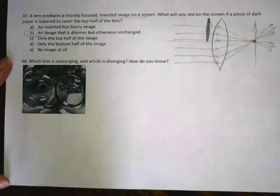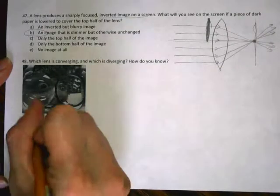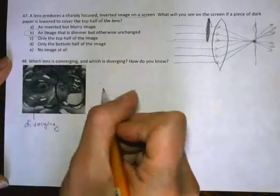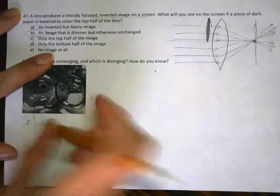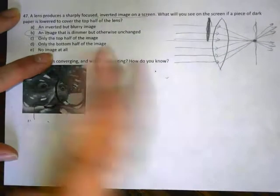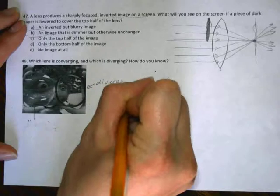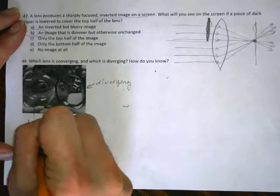Next is which lens is converging and which one is diverging? That's your diverging one. And, oops, I'm saying that wrong. That is your diverging one. And that is your converging one.